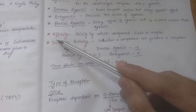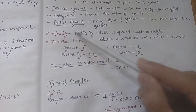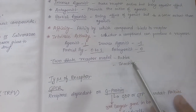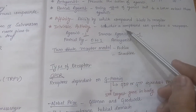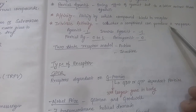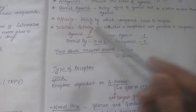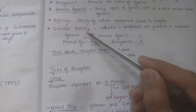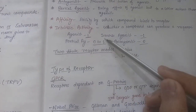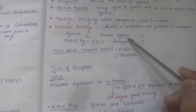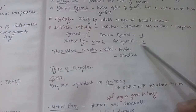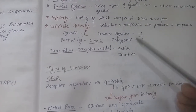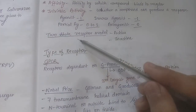There are two more terms: affinity and intrinsic activity. Affinity is the ability by which a compound binds to its receptor. Intrinsic activity is whether that compound, once bound to the receptor, can produce a response. For agonists, intrinsic activity is 1; for partial agonists, it is between 0 and 1; for inverse agonists, it is minus 1; and for antagonists, it is 0, because antagonists do not produce any response.